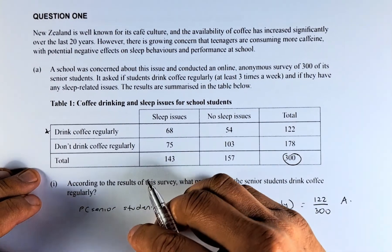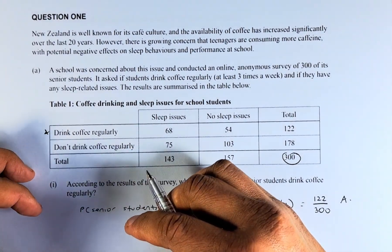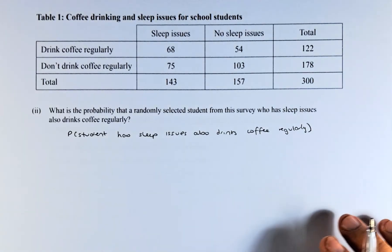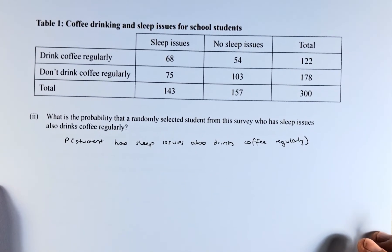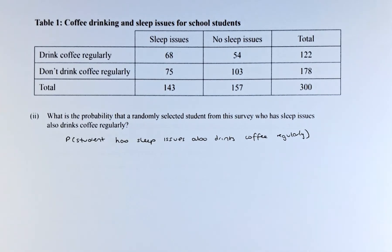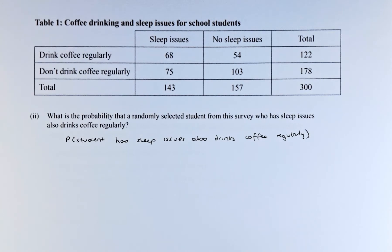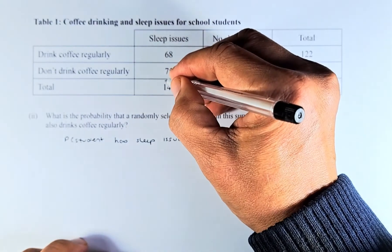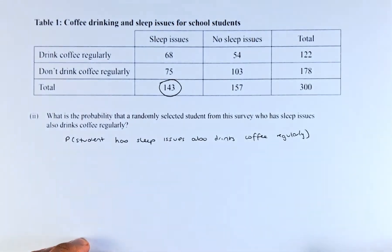Now we shall continue with part 2 of the question — 1A part 2. The second question is: what is the probability, using the same table, that a randomly selected student from this survey who has sleep issues also drinks coffee regularly? We are interested in only the 143 people with sleep issues.